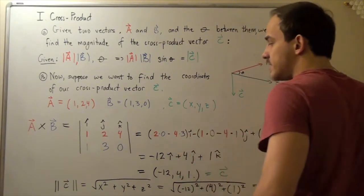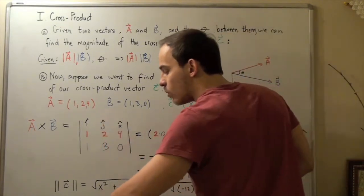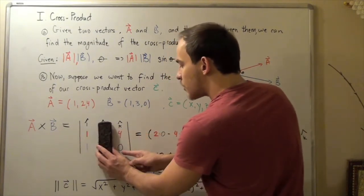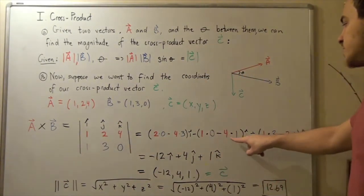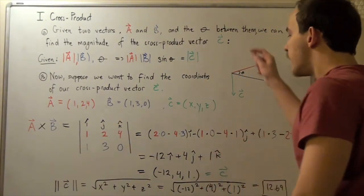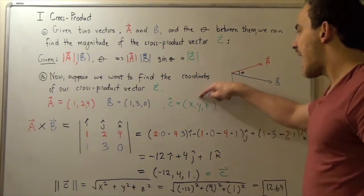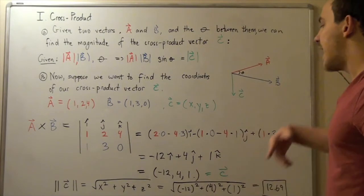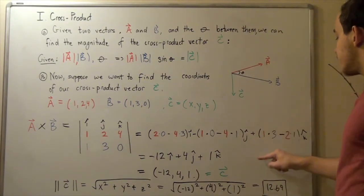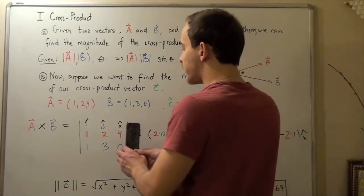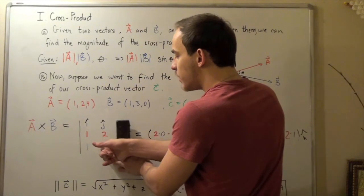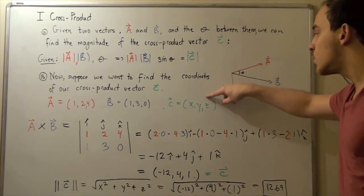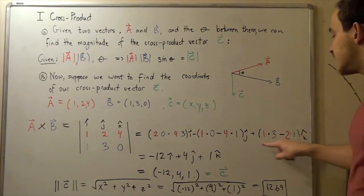Then we subtract — and I put parentheses — to find the y-coordinate. We cover up the y-column and cross-multiply: 1 times 0 minus 4 times 1. This result, multiplied by negative 1, gives our y-coordinate, and we multiply it by j-hat. Finally, we add parentheses and cover up the k-column for the z-coordinate: 1 times 3 minus 2 times 1. This is our z-coordinate, and we multiply by k-hat.